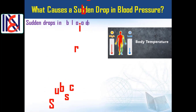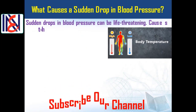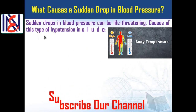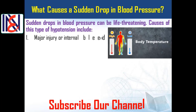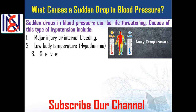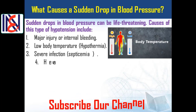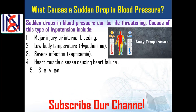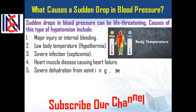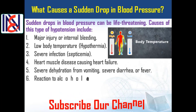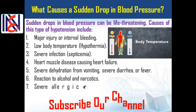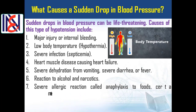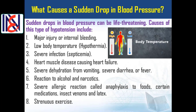What causes a sudden drop in blood pressure? Sudden drops in blood pressure can be life-threatening. Causes of this type of hypotension include: 1) major injury or internal bleeding, 2) low body temperature (hypothermia), 3) severe infection (septicemia), 4) heart muscle disease causing heart failure, 5) severe dehydration from vomiting, severe diarrhea, or fever, 6) reaction to alcohol and narcotics, 7) severe allergic reaction called anaphylaxis to foods, certain medications, insect venoms, and latex.